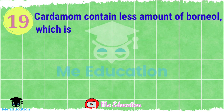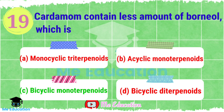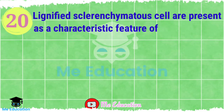Next question, number 19: Cardamom contains less amount of borneol, which is — Option A: monocyclic monoterpenes; Option B: acyclic monoterpenes; Option C: bicyclic monoterpenes; Option D: bicyclic monoterpenes. Pause the video and try to answer this question. The right answer is Option C, bicyclic monoterpenes.